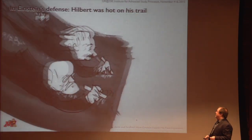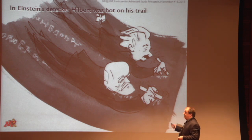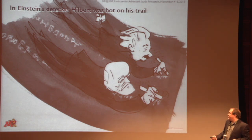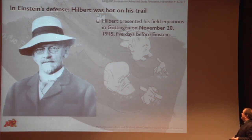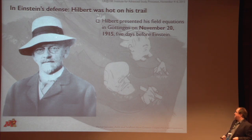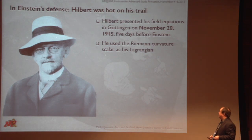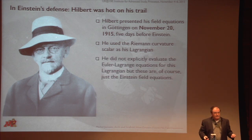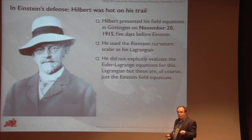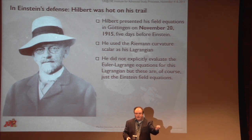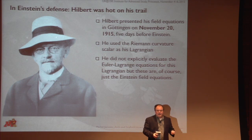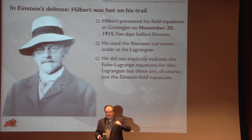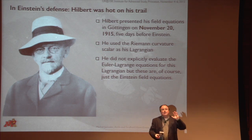The other question left to answer: in Einstein's defense, he needed to get there before Hilbert did. So that raises the question: did he? Hilbert presented his field equations in Göttingen on November 20th, 1915 — five days before Einstein. He used the Riemann curvature scalar as his Lagrangian. He does not evaluate the field equations, but I would stipulate that Hilbert would know, given any Lagrangian, how to figure out what the Euler-Lagrange equations are — and those are the Einstein field equations. There's some confusion about a piece that is cut out of a document that bears on this, but Hilbert had the field equations.